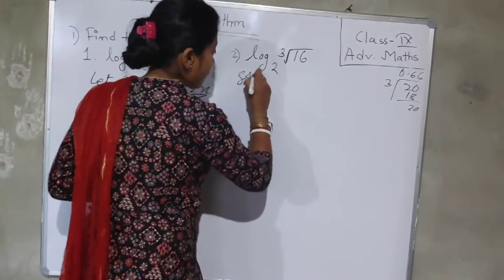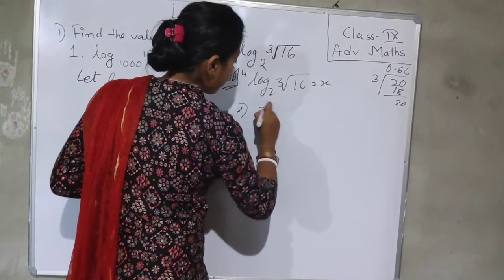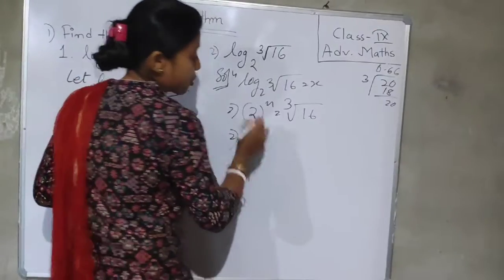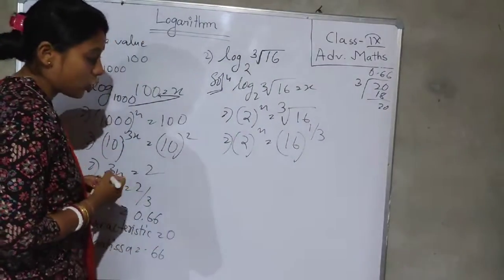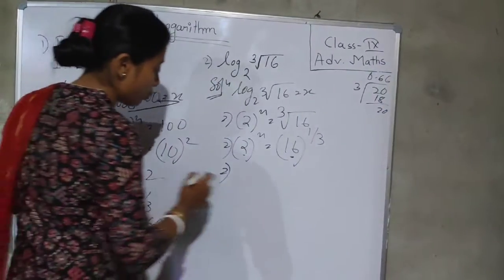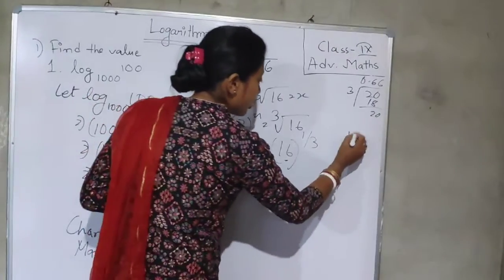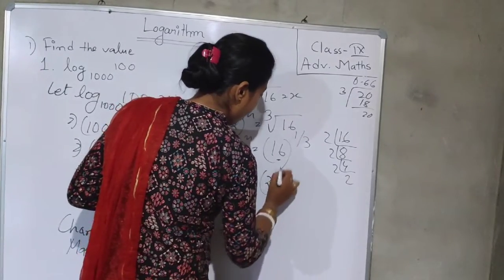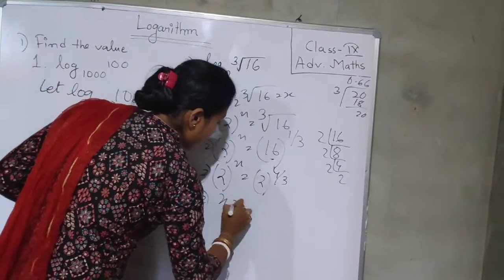Similarly, for the next problem, take the log equal to x. This becomes 2 to the power x equal to the cube root of 16, which is 16 to the power 1 by 3. We make the base the same: 16 is 2 to the power 4, so the right side becomes 2 to the power 4 by 3. Since the bases are the same, x equals 4 by 3.